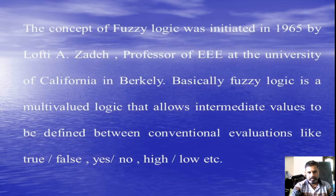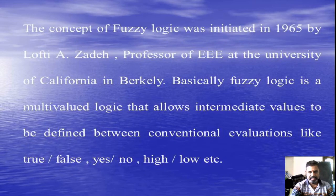The concept of Fuzzy Logic was initiated in 1965 by L.A. Zadeh, professor of EEE at the University of California in Berkeley. Basically, Fuzzy Logic is a multi-valued logic that allows intermediate values to be defined between conventional evaluations like true or false, yes or no, high or low, etc.